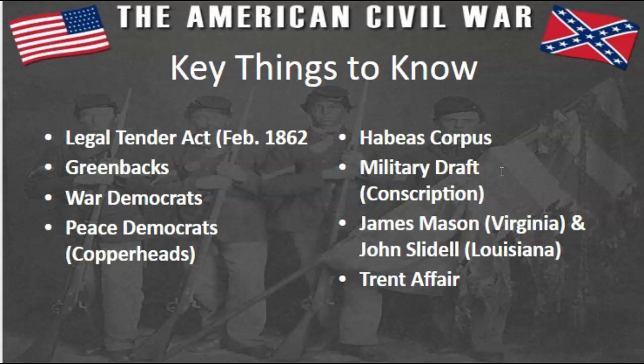Lincoln had to enforce martial law, and to get people to sign up he had to suspend the right of habeas corpus — a person's right not to be imprisoned unless charged with a crime and given a trial. This is another example of Lincoln making a decision that not everyone liked but that needed to be done, similar to his decision keeping Maryland from seceding from the Union.